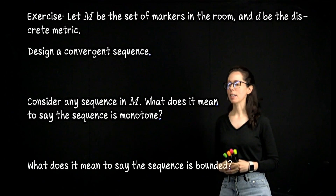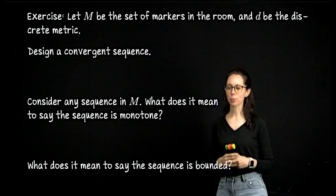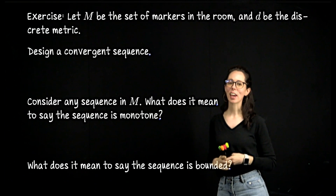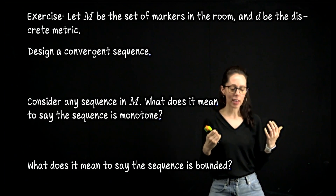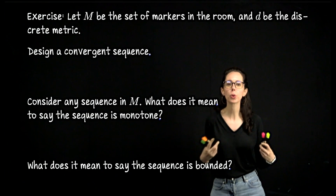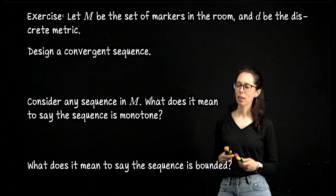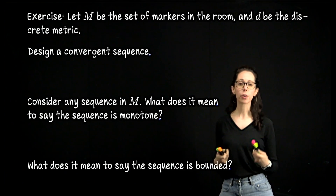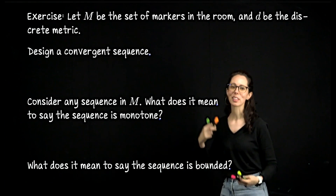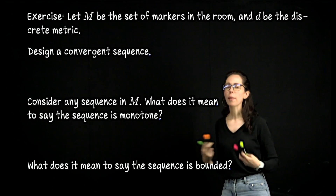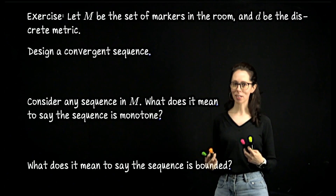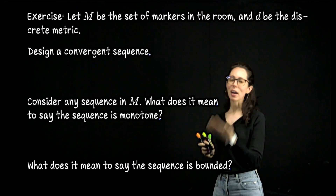I have here three exercises for you to pause and work through on your own. First, suppose our metric space is the set of markers — these four markers — together with the discrete metric. What would it look like to say a sequence in that metric space converges? What would have to be true about the sequence? Also think about whether it means anything to say the sequence is monotone in this metric space, and what it would mean to say a sequence is bounded.